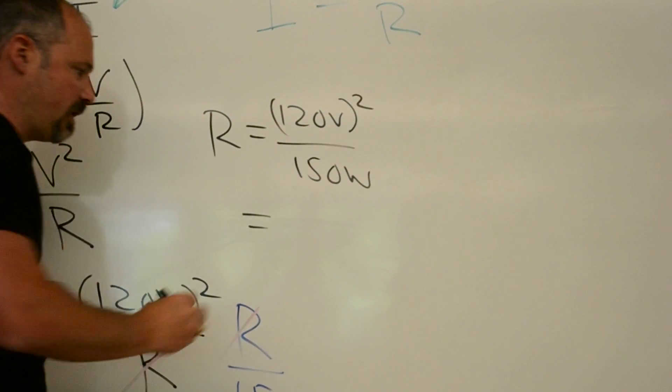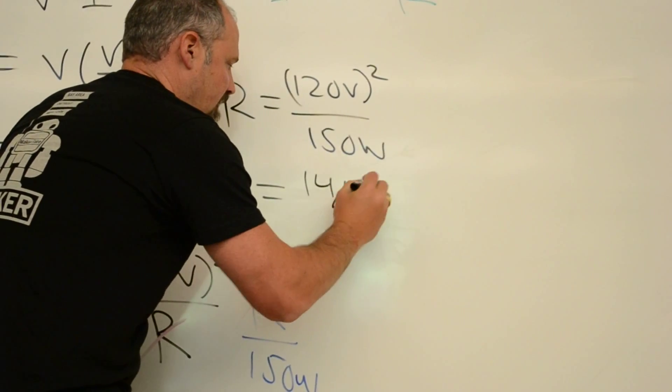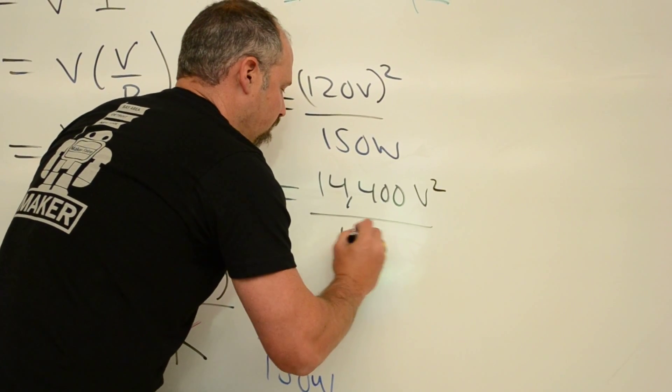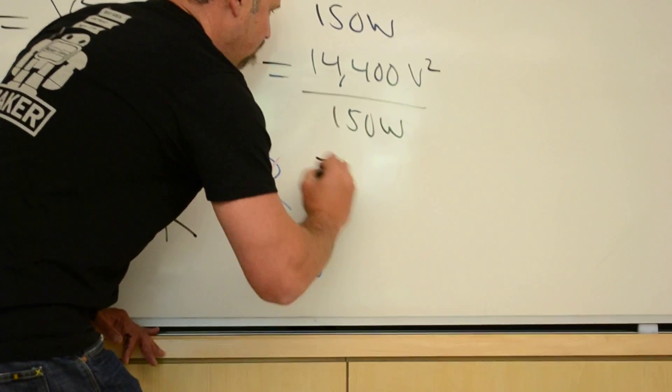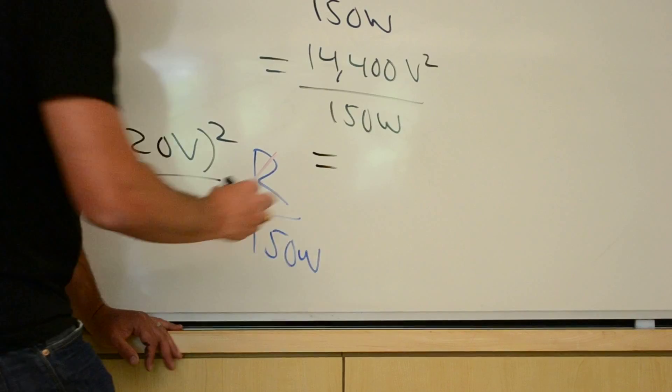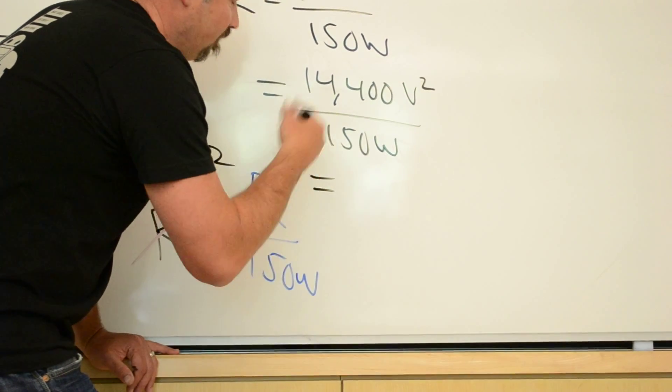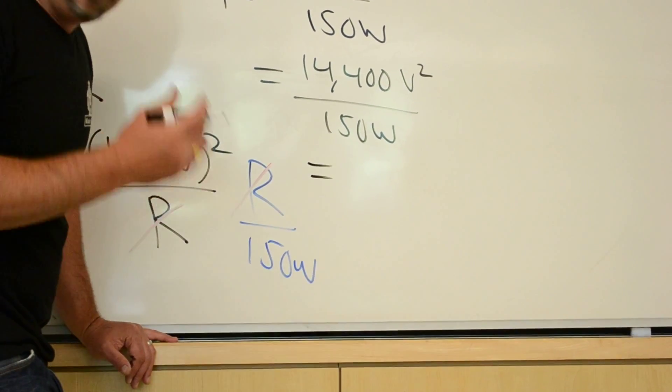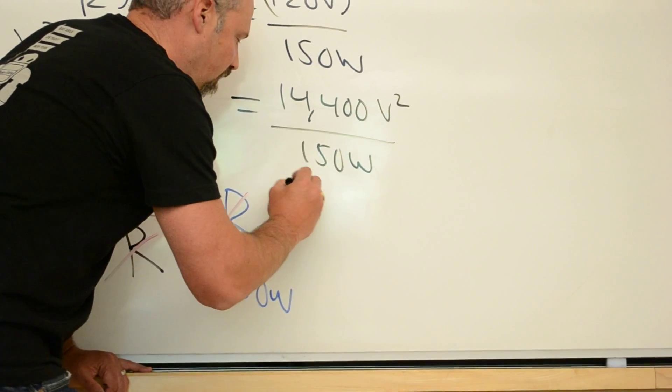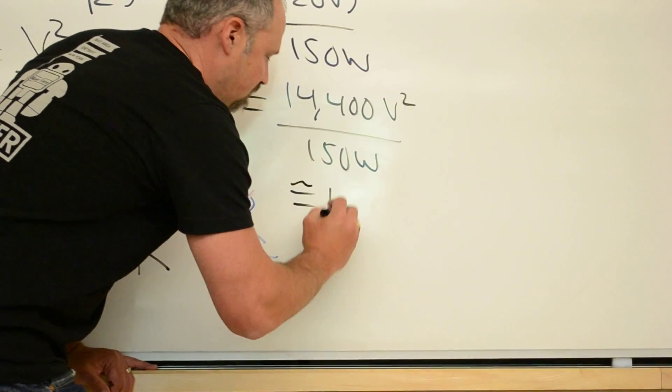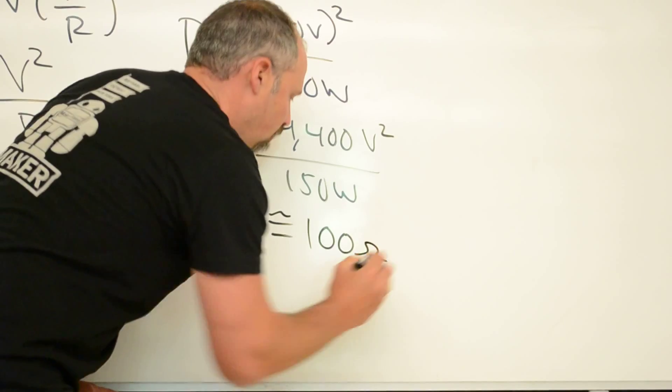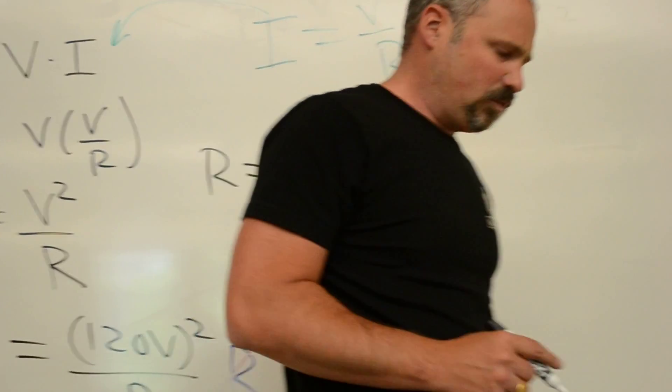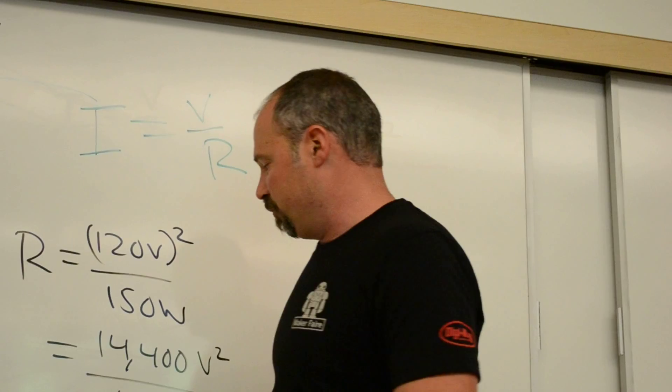120 squared is 14,400 volts squared all over 150 watts. And if you work that out, it's around 95 or something. But since we're dealing in approximates, let's call it 100 ohms. So the resistance of a 150 watt light bulb is about 100 ohms.